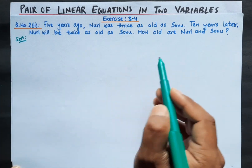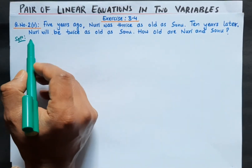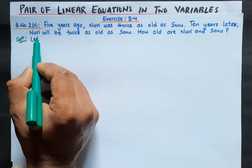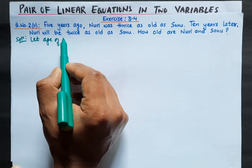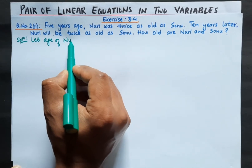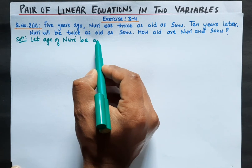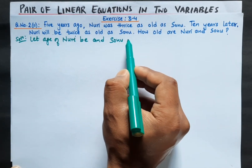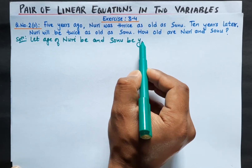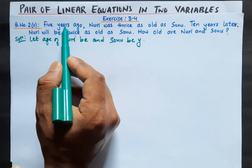We need to find the ages of Nuri and Sonu. So let the age of Nuri be x and the age of Sonu be y. We have assigned x and y as the ages of both of them.